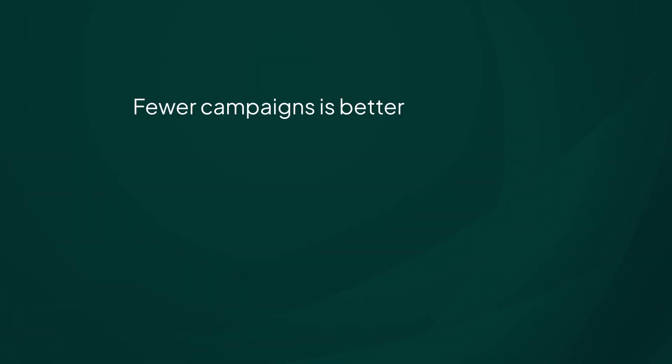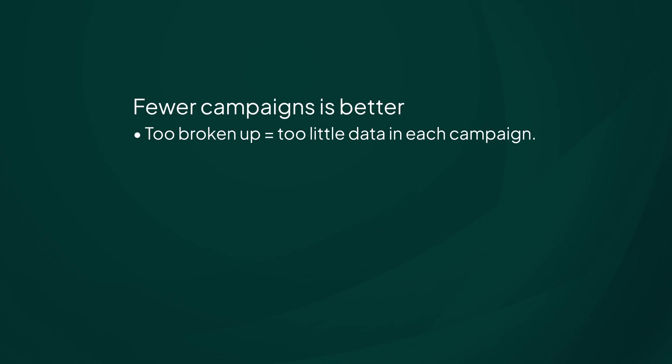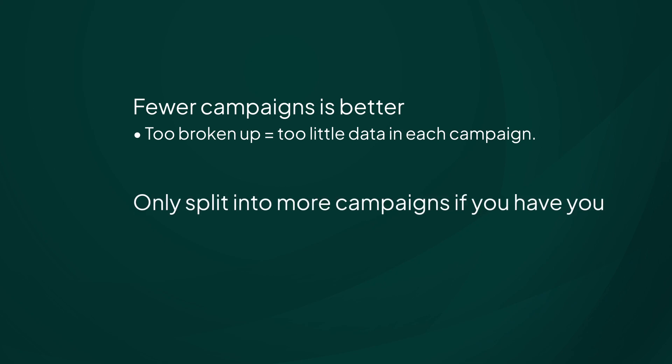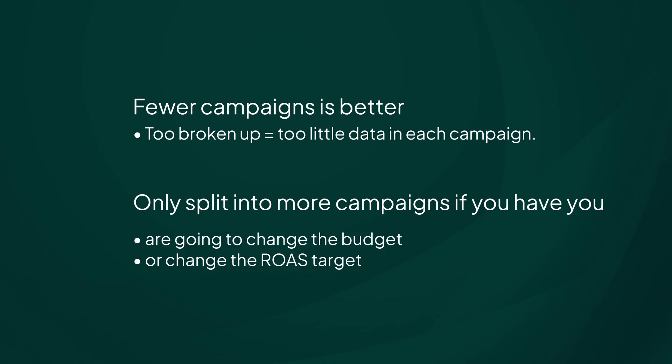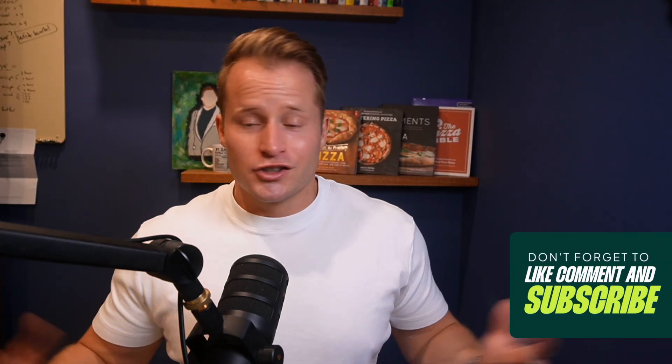On campaign structure, I have very few rules. Fewer campaigns are much better — too many and you have too little data in each, since PMAX campaigns don't share data with each other. Only split into more campaigns if you're going to change the budget or ROAS target — that's it. I don't think advanced campaign structures work with PMAX. Standard shopping is better when you venture into more advanced structures. The benefit of PMAX is combining search and shopping into a single campaign for easy management. Once you start splitting across price competitiveness, margins, or categories, you lose the value PMAX brings — which is simplicity and data aggregation. That's how I audit PMAX.